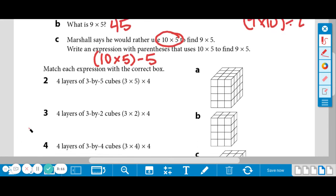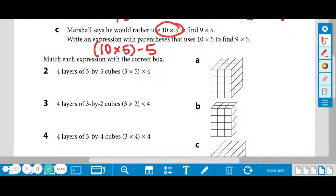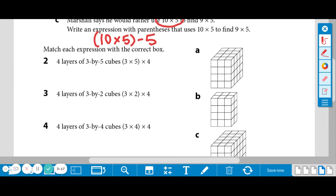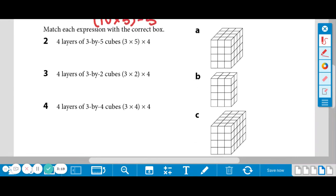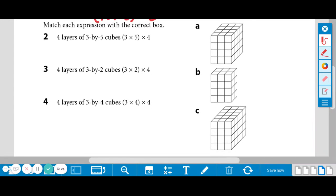Number two, three, and four, you are matching these expressions to the correct box. So we have four layers, and recall layer is the height of a prism in our math terms.